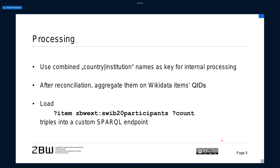We then loaded the corresponding data — which is the Wikidata item and the count of participants per institution — into a custom SPARQL endpoint. This is a bit of a tricky point, because this SPARQL endpoint has to be verified by Wikidata as a reliable source. There is a web page process where you can announce your endpoint and make this possible.